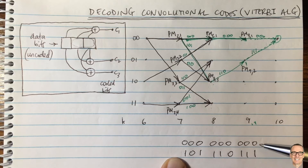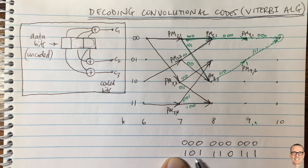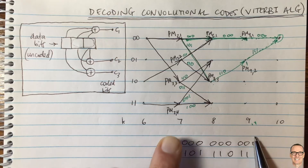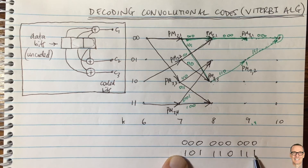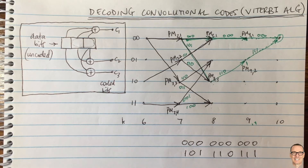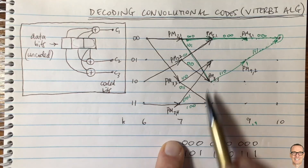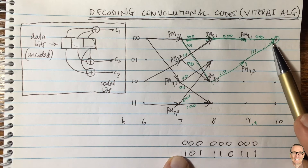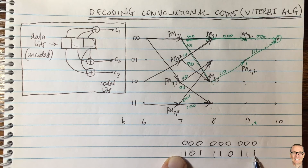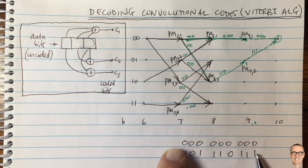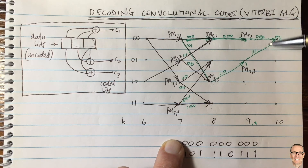These are much longer sequences, so errors are less likely to cause a wrong decision. If only one error happens in this sequence, it'll still match up best with the sequence it came from. Even with two or three errors, you're still matching to the correct sequence. You have to make many errors before it starts looking like the other sequence and you make the wrong choice.